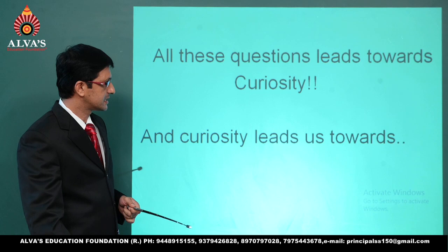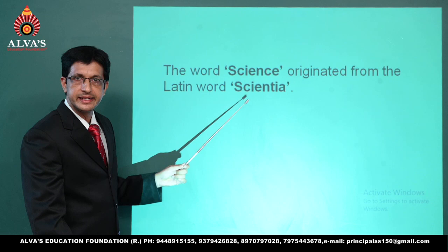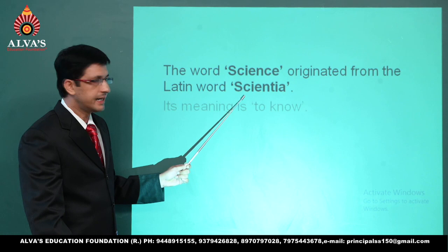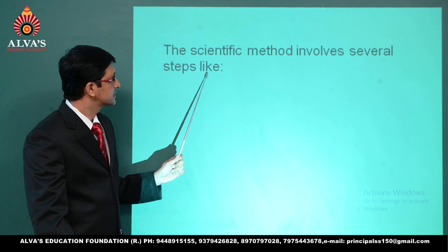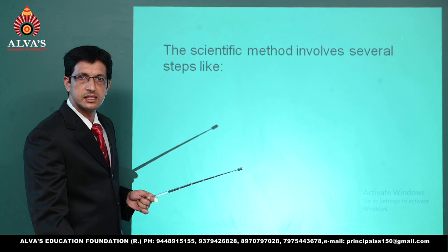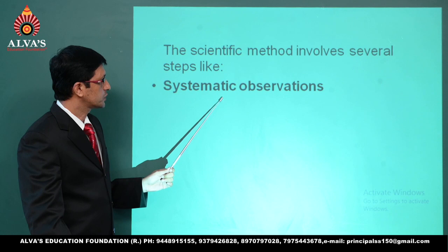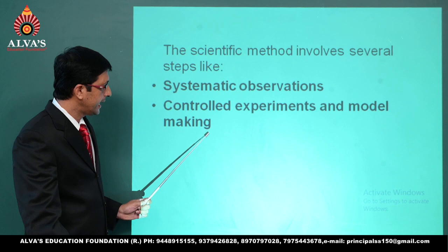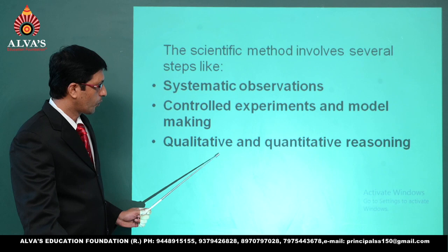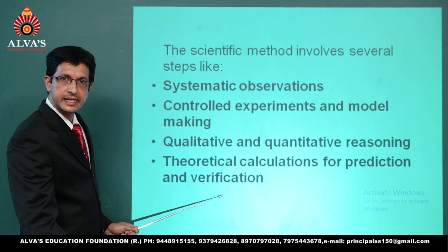The word science originated from the Latin word 'scientia.' The scientific method involves several steps which follow one after the other: first, systematic observations; secondly, controlled experiments and model making; thirdly, qualitative and quantitative reasoning; and lastly, theoretical calculations for prediction and verification.